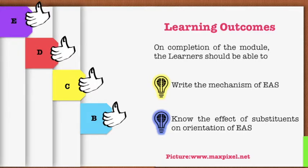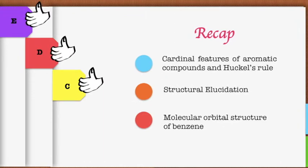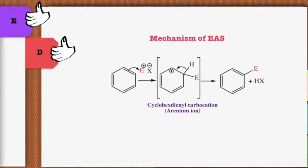Before starting with the topic, let us recapitulate what we have learned so far. We have seen the cardinal features of aromatic compounds and Hückel's rule, went through the structural elucidation, and finally we have seen the molecular orbital structure of benzene.